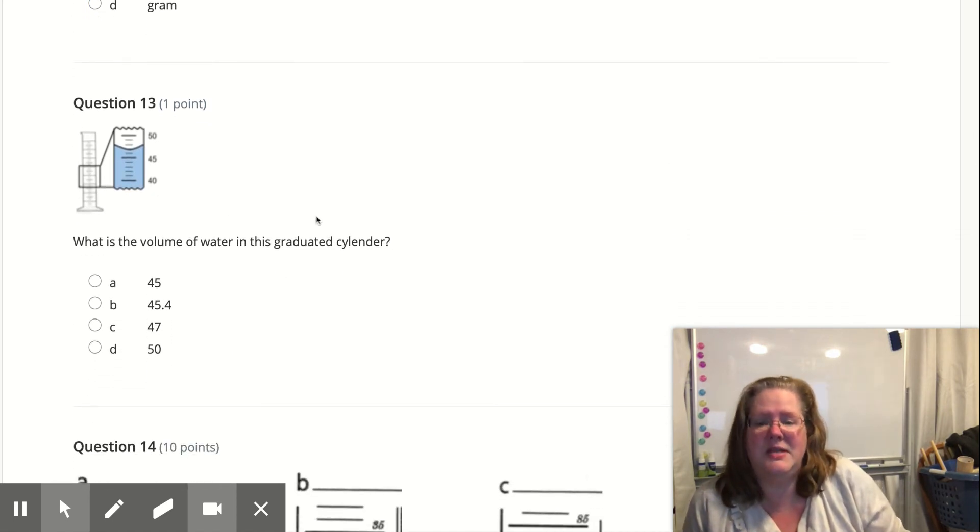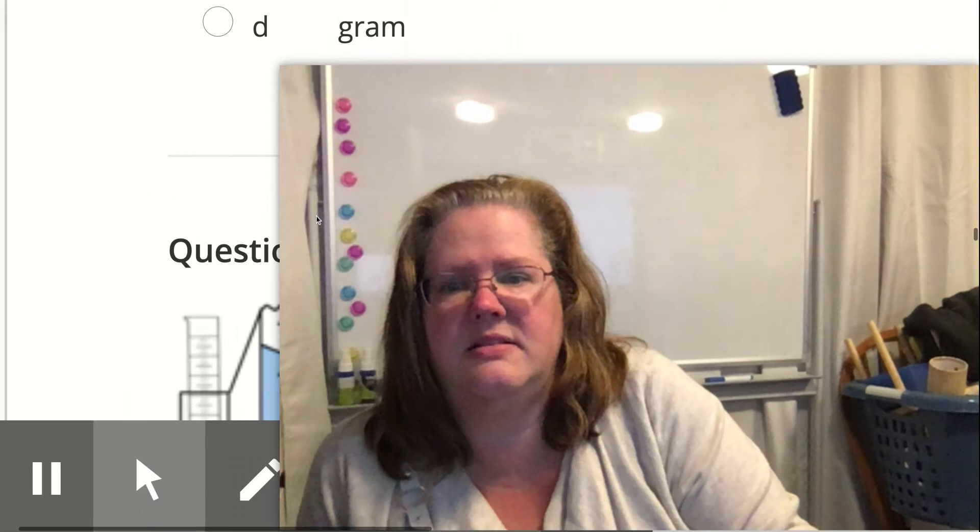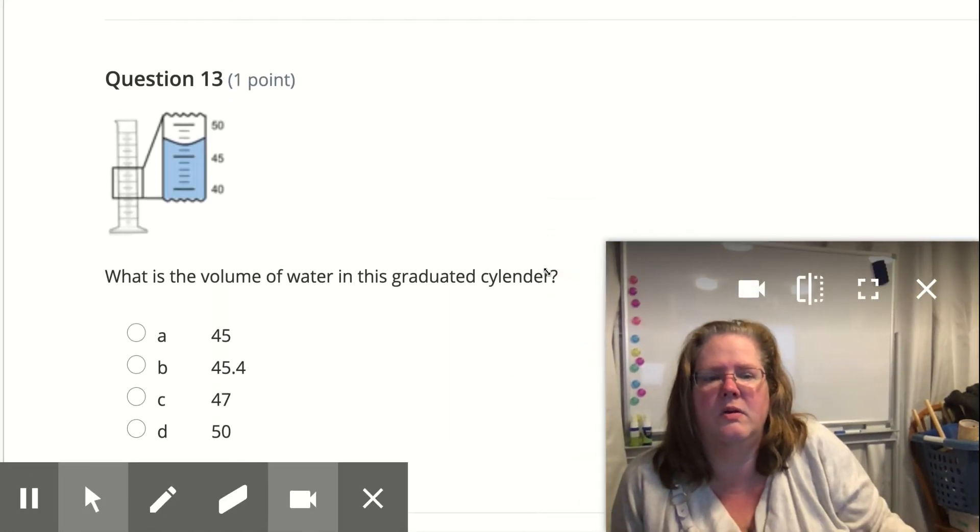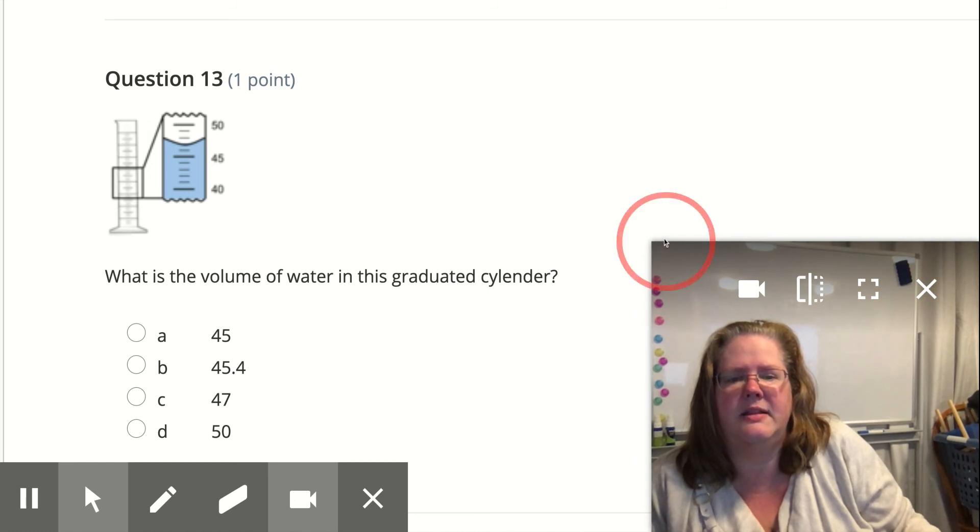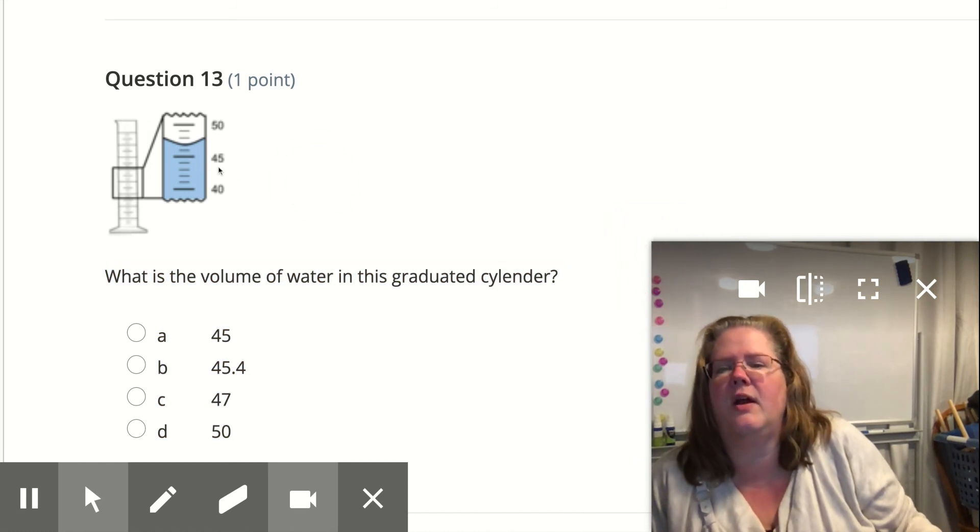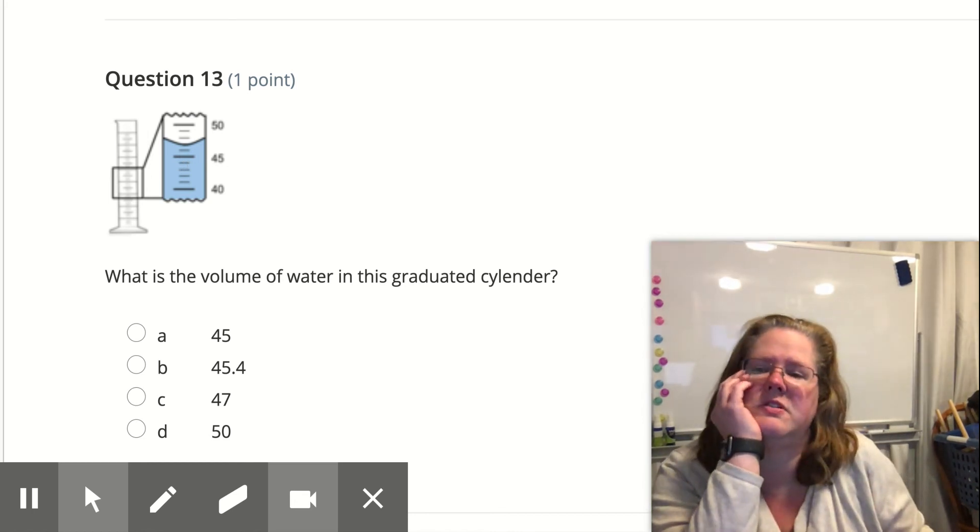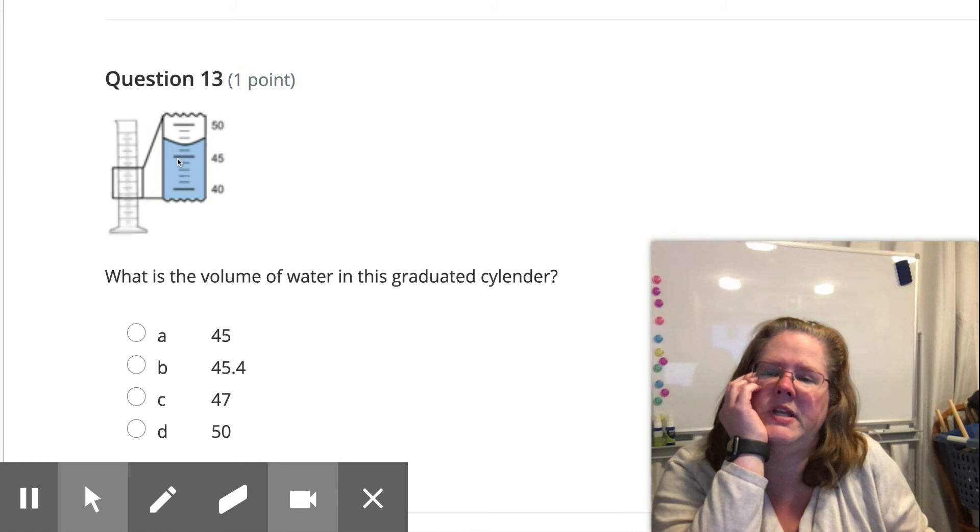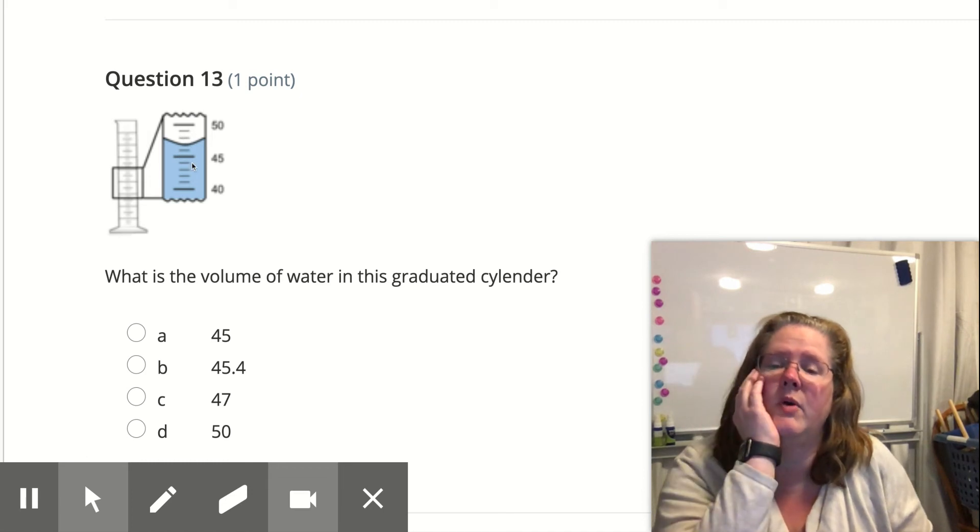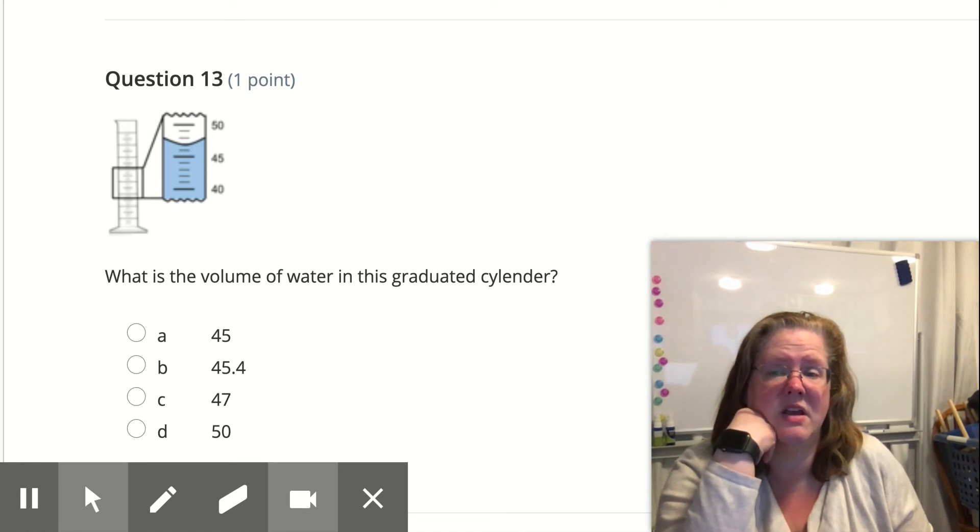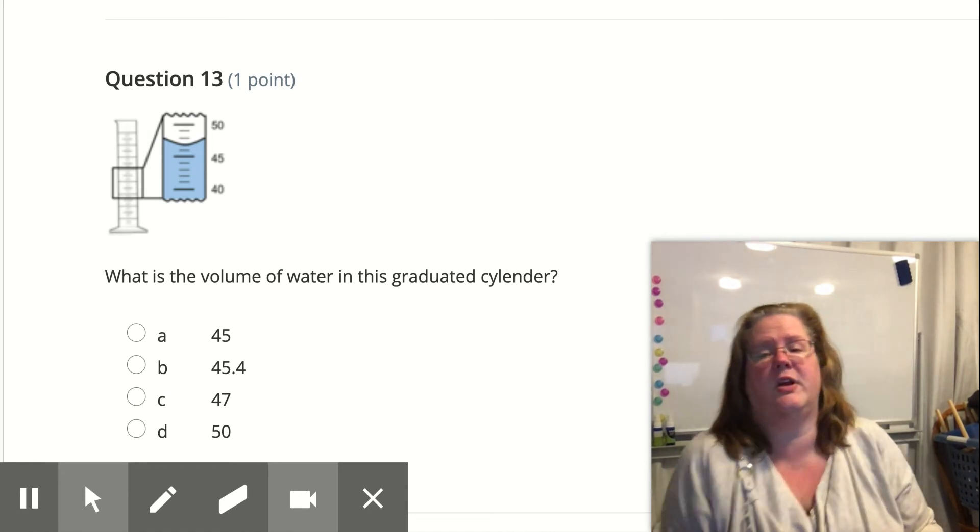Now, this is reading that meniscus. So if we look here, it's important to read when you're doing graduated cylinders, what the gradations are. In this case, between each large mark, it looks like five because I'm going up from 40, 45 to 50, which means I've got one, two, three, four. So I'm going up by ones, but sometimes you can go up by twos and sometimes you can go up by fives or even tens or hundreds if you have a really large graduated cylinder.